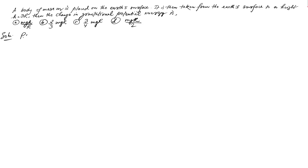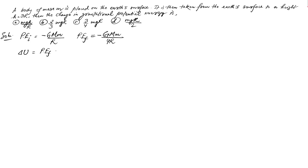Let's do it the traditional way. The initial potential energy on the surface of the Earth is minus GMm/R. The final potential energy at height h equal to 3R is minus GMm divided by (3R + R), that is 4R. So the change in potential energy is final minus initial potential energy, giving minus GMm/4R.